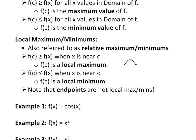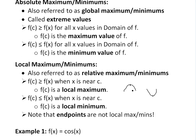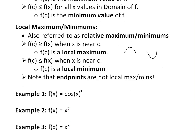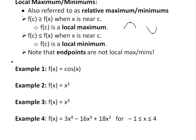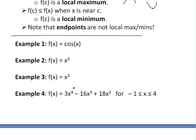For local extrema, whenever you have a point like this or like this, these two points would be the local max and local minimum, and if they're the highest or lowest overall they'll be the absolute max and min. Now I'm going to go over these examples: example one is cos(x), example two is x squared, example three is x cubed, and example four is a more complicated function over the range x greater than or equal to negative one and less than or equal to four.